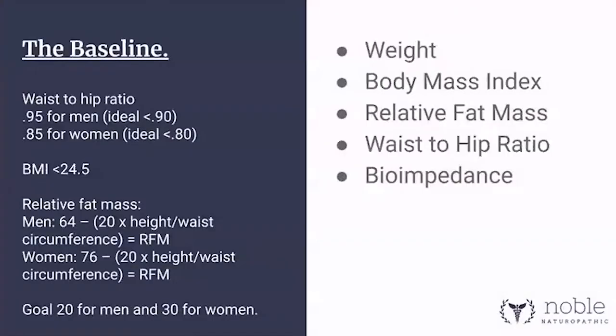So what do we do when we're first meeting with someone who's having difficulty losing weight? We need our baseline measurements. There are a few things that are really helpful. Obviously weighing the person, getting their body mass index, and taking some measurements. So determining relative fat mass — that's a calculation you see on the left — and waist-to-hip ratio.